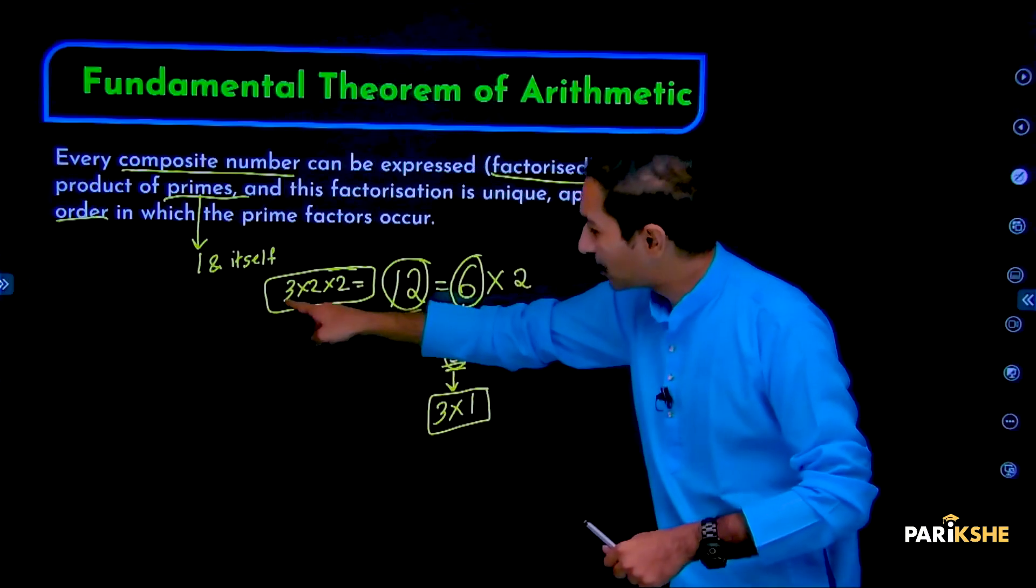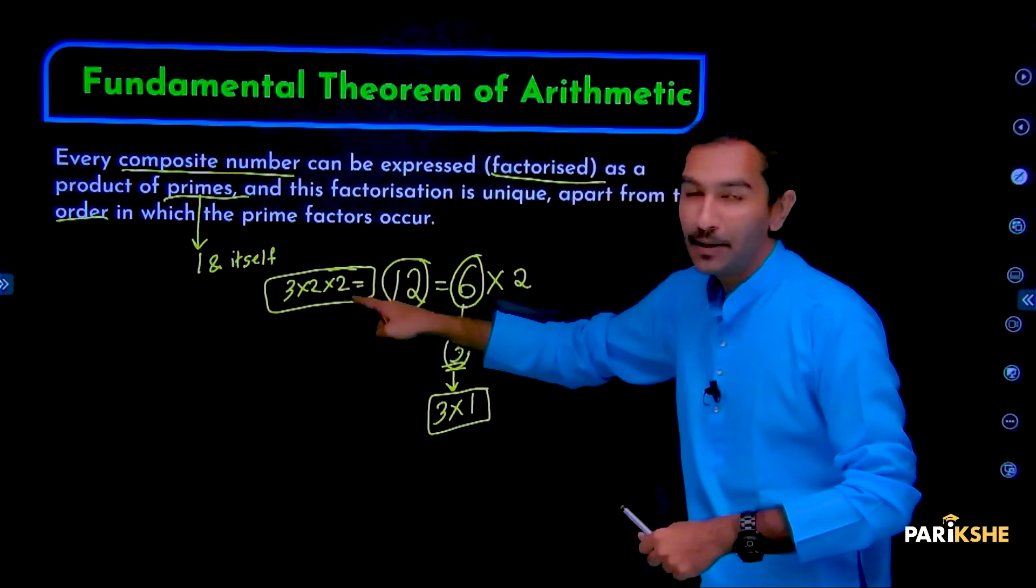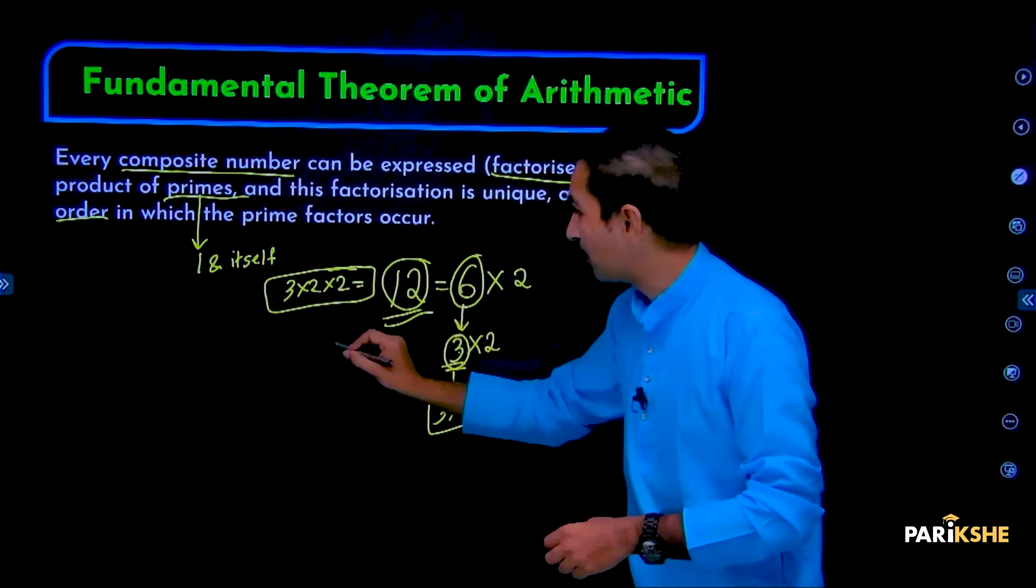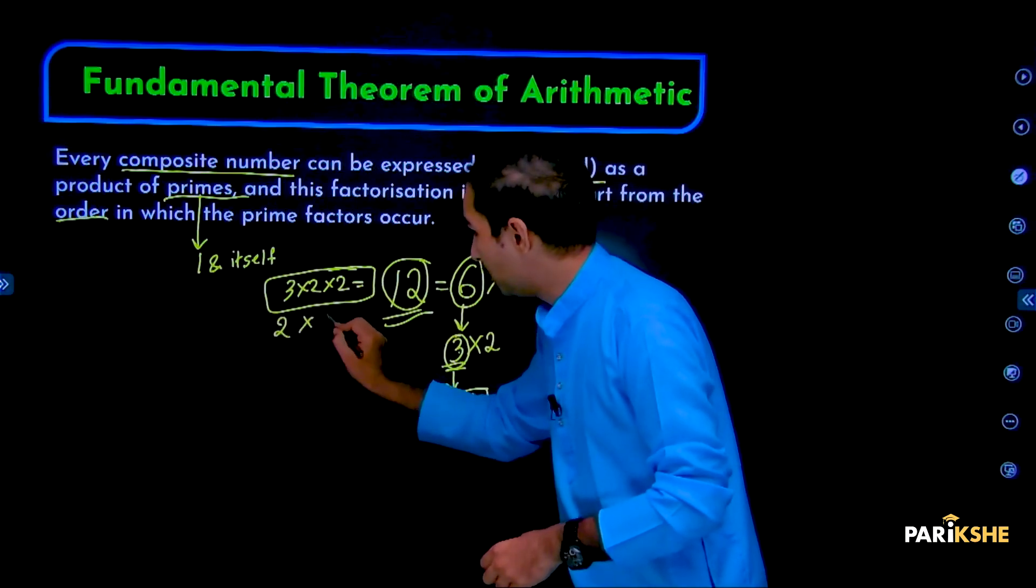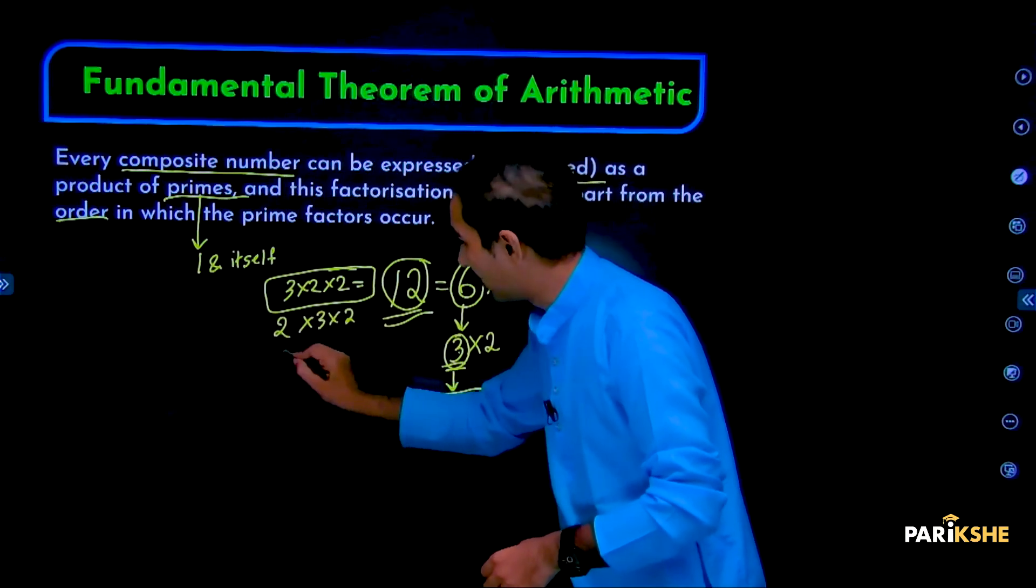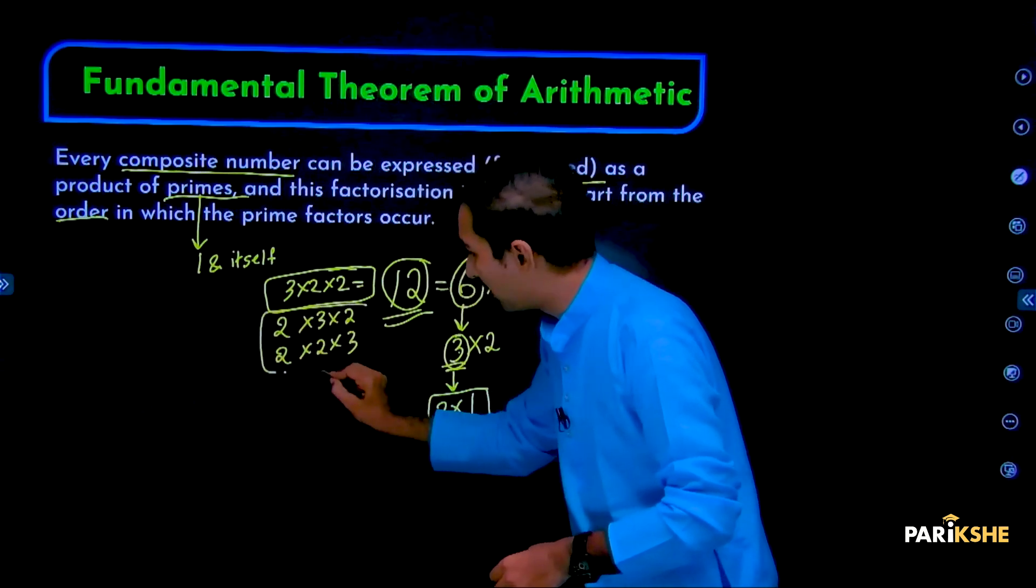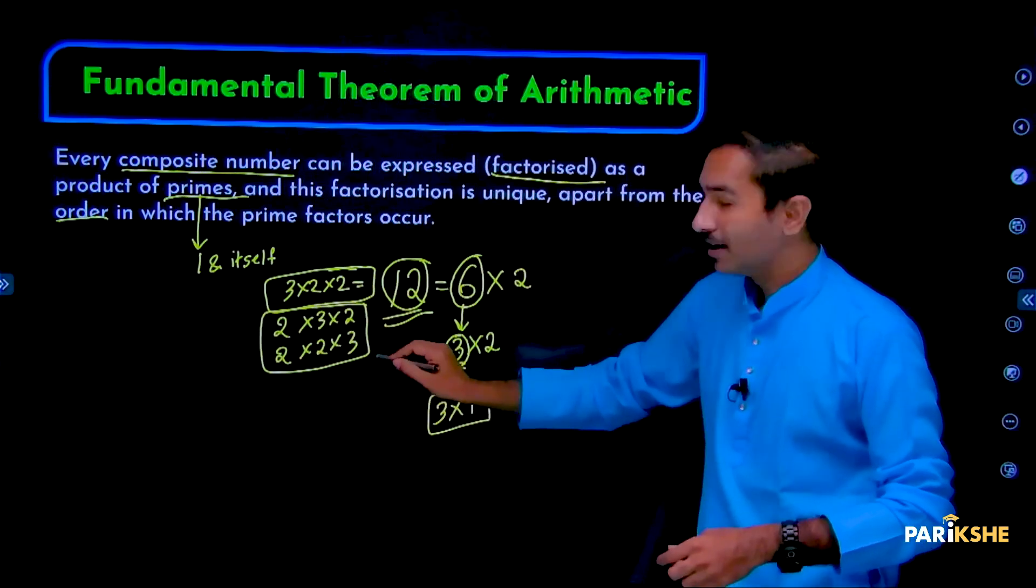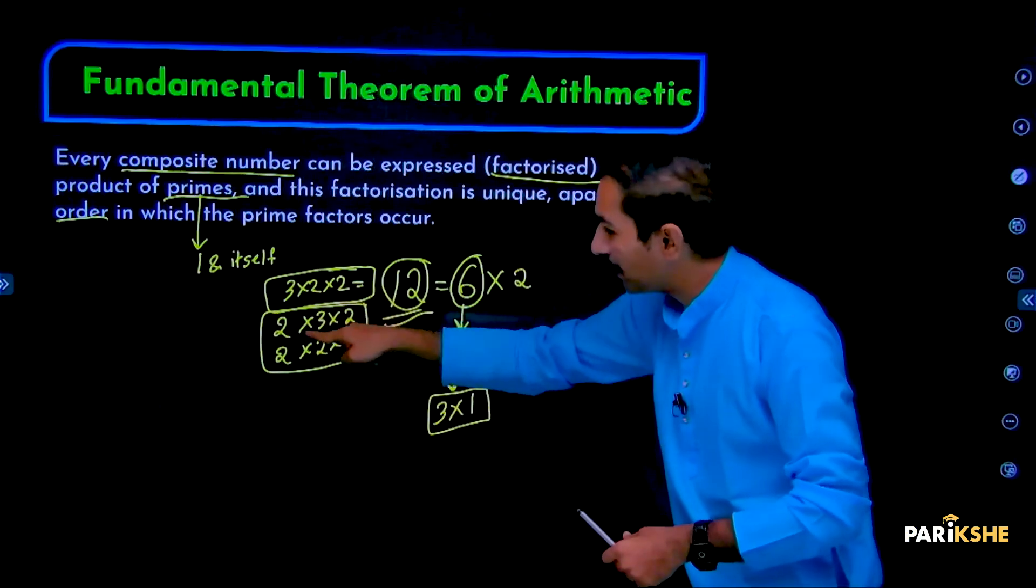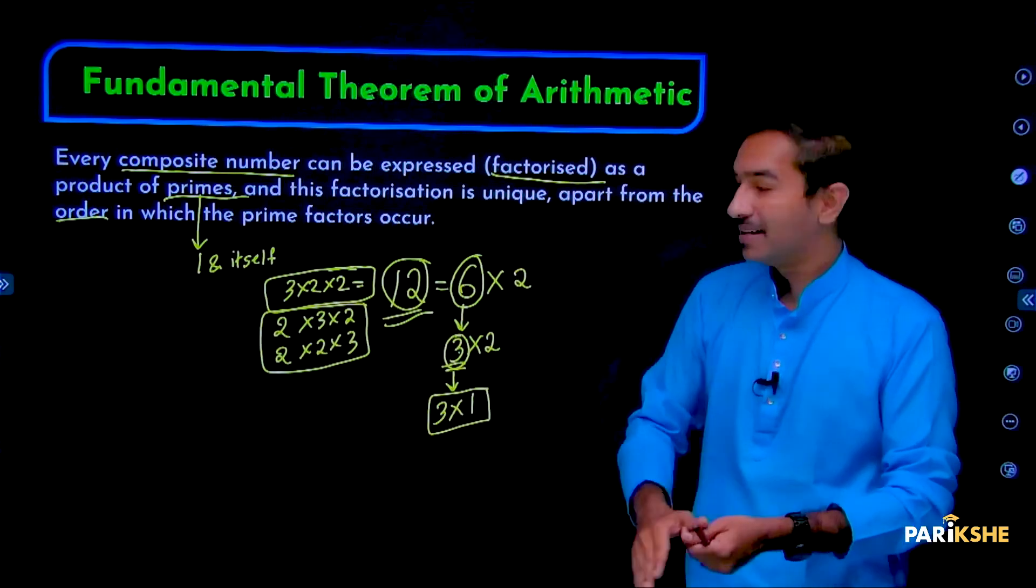See, what is the order here? First 3 comes, then 2 comes, then 2 comes. Or we could write 2 into 3 into 2, or 2 into 2 into 3. So, except for this order, the numbers remain the same, right? If we ignore the order, the numbers are the same.